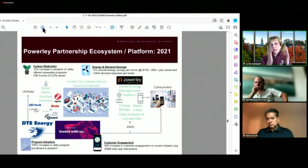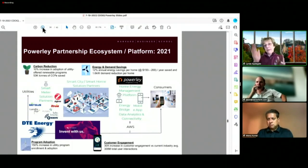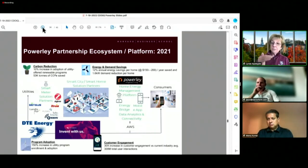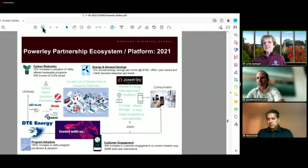Program adoption, 150% increase in utility program enrollment and adoption. It's starting to move out. Other utilities are starting to adopt. But this is slow. Keep in mind, these are regulated utilities. In a minute, I'm going to ask you, what advice would you give? And then we'll move to Q&A. And then finally, customer engagement, a 30 times increase in customer engagement versus the current industry average and 300 million total user interactions to date. They're just getting started.